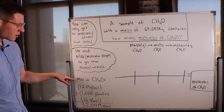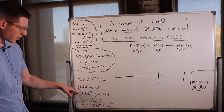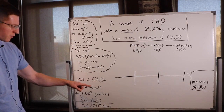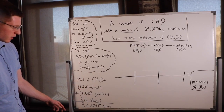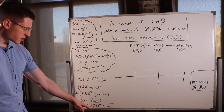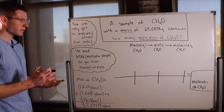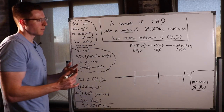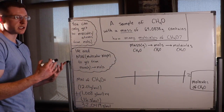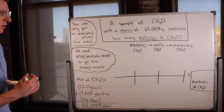The first thing to find is the molecular weight of CH4O. You do this for any compound by adding together the atomic weights from the periodic table for each atom in the molecule: one carbon at 12.01 grams per mole, four hydrogens at 1.008 grams per mole, and one oxygen at 16 grams per mole. Adding those up, the molecular weight of CH4O is 32.0419 grams per mole — meaning in one mole of CH4O, there are 32.0419 grams. Since I'm doing a multi-step conversion, I'll set up railroad tracks.